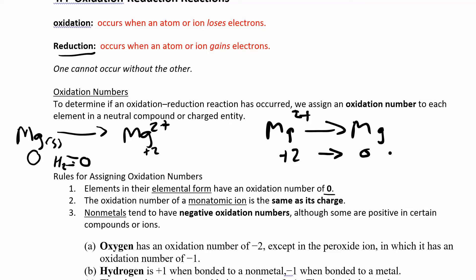So those are two of the rules for assigning oxidation numbers: if an element is just in its elemental form, the oxidation number is zero; and if it's an ion or in an ionic compound, the oxidation number is the charge of the ion.